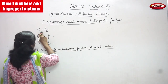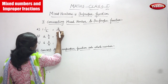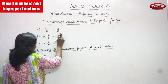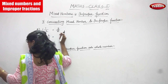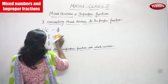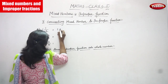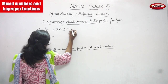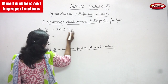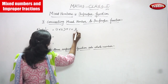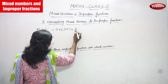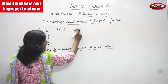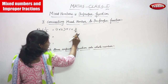Look at this: 1 into 2 in the bracket plus 1. So 1 into 2 gives 2, and 2 plus 1 gives 3. So 3 as the numerator and 2 as the denominator — you have to write 3 by 2. This is the answer.